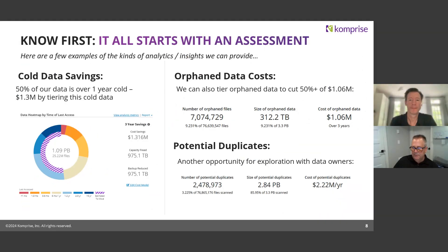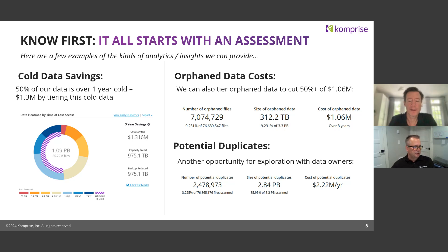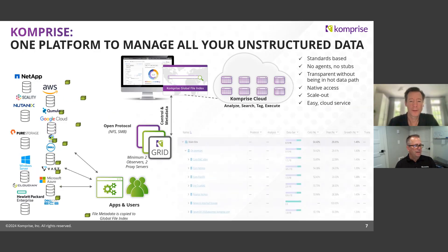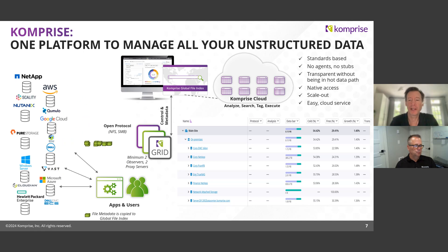One question that came in is about architecture — specifically the third bullet: does Comprise sit in front of the hot data? Is it in the hot data path? Can you tell us why it's important not to be in the hot data path, and why do customers ask that question?